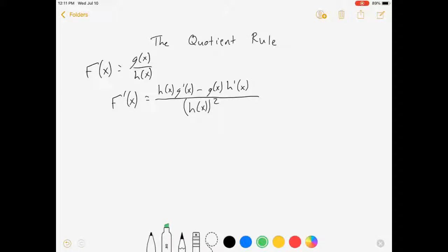Now, I was taught to say, if we call g the high function and h the low function, then we have low d high minus high d low all over low squared. Low d high minus high d low—I don't know if that will stick with your memory but it stuck with me—all over low squared, and there it is.